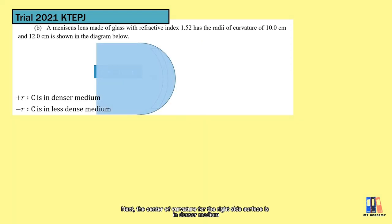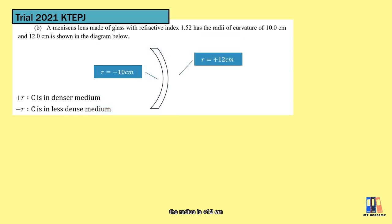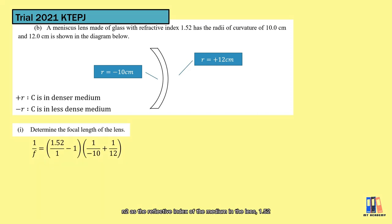Next, the center of curvature for the right side surface is in denser medium, which is also a convex surface, so the radius is positive 12cm. Now, we are going to determine the focal length for this meniscus lens. Apply the lens maker formula that we have n2 as the refractive index of the medium in the lens, 1.52, n1 as the medium of the air. Putting those values we can get the focal length is equal to negative 115cm.